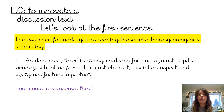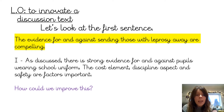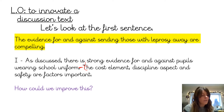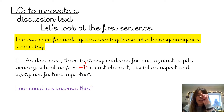So there's strong evidence for and against — I've summed up, we're looking at both sides. To improve, I think I could just change this to a dash to emphasise. So: there is strong evidence for and against pupils wearing a school uniform — cost element, discipline aspect and safety factors are important.